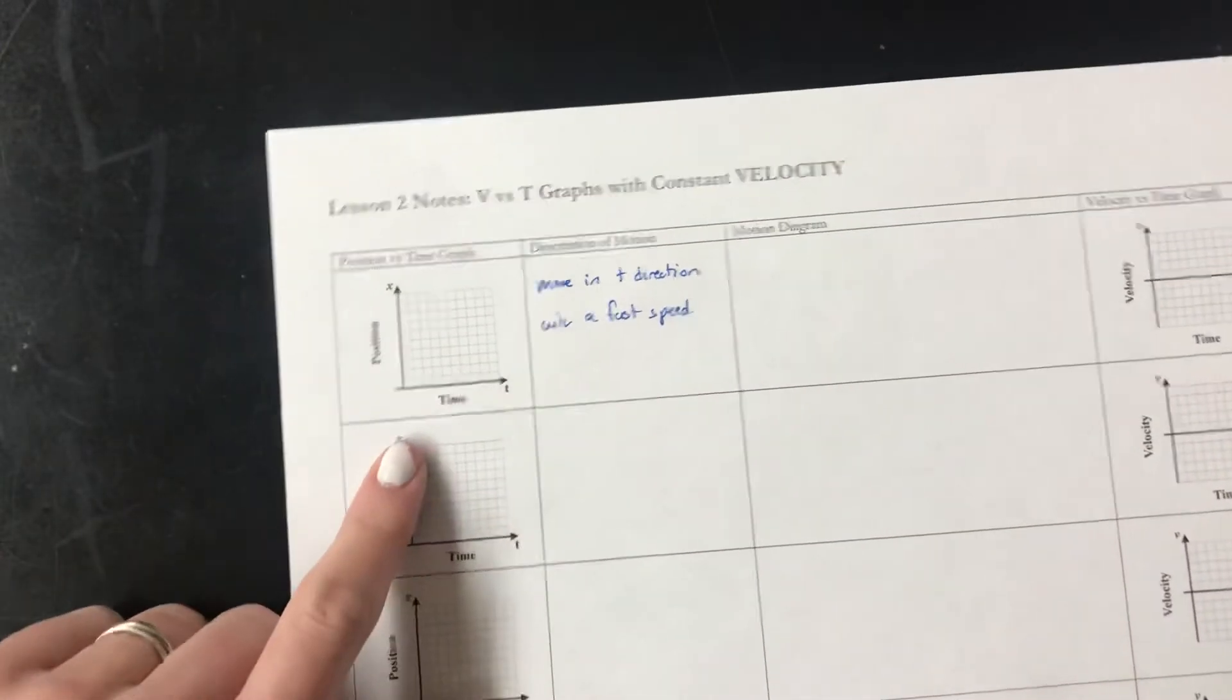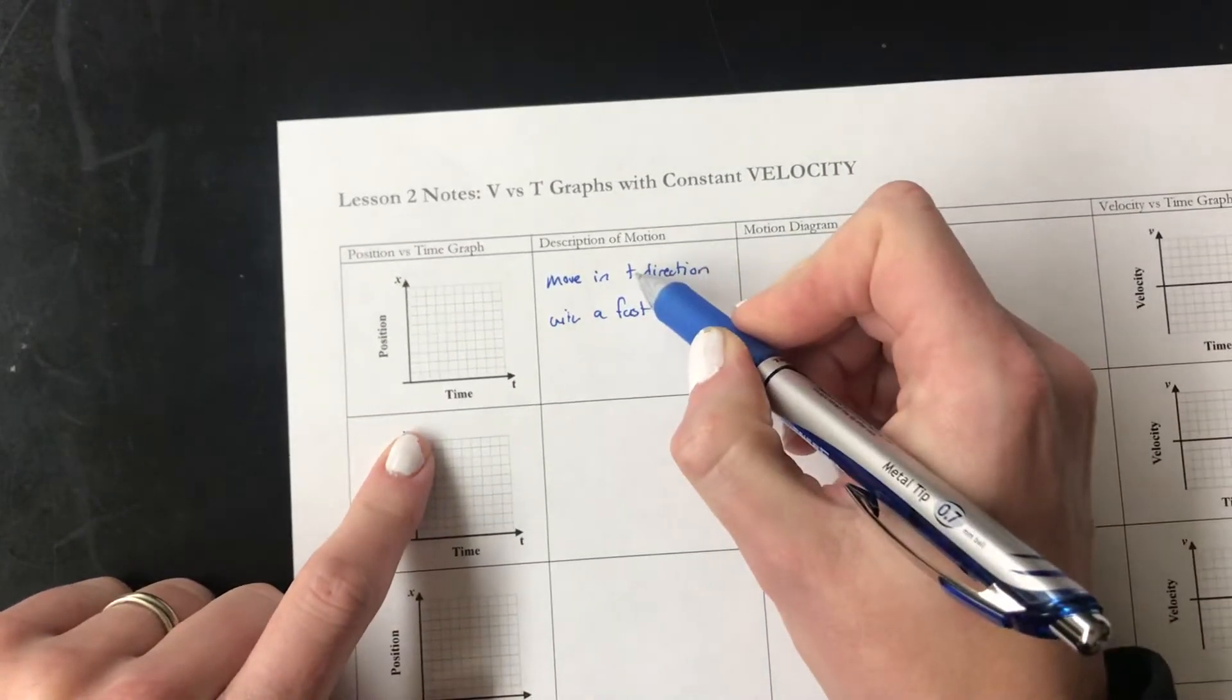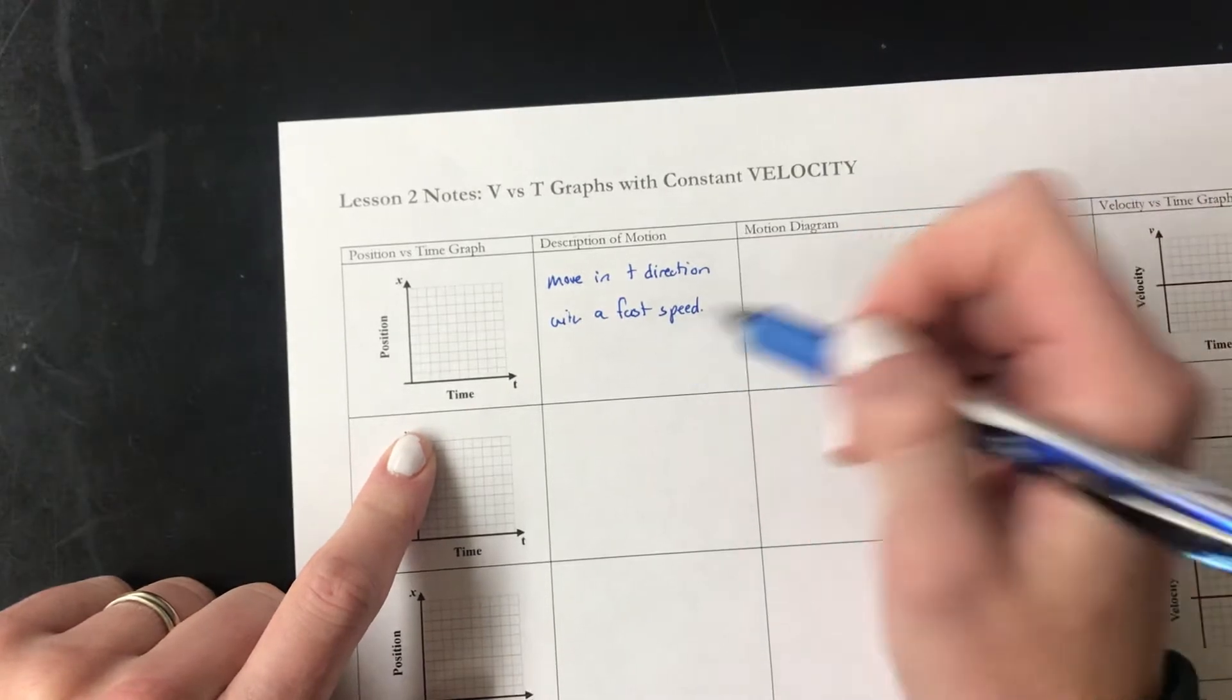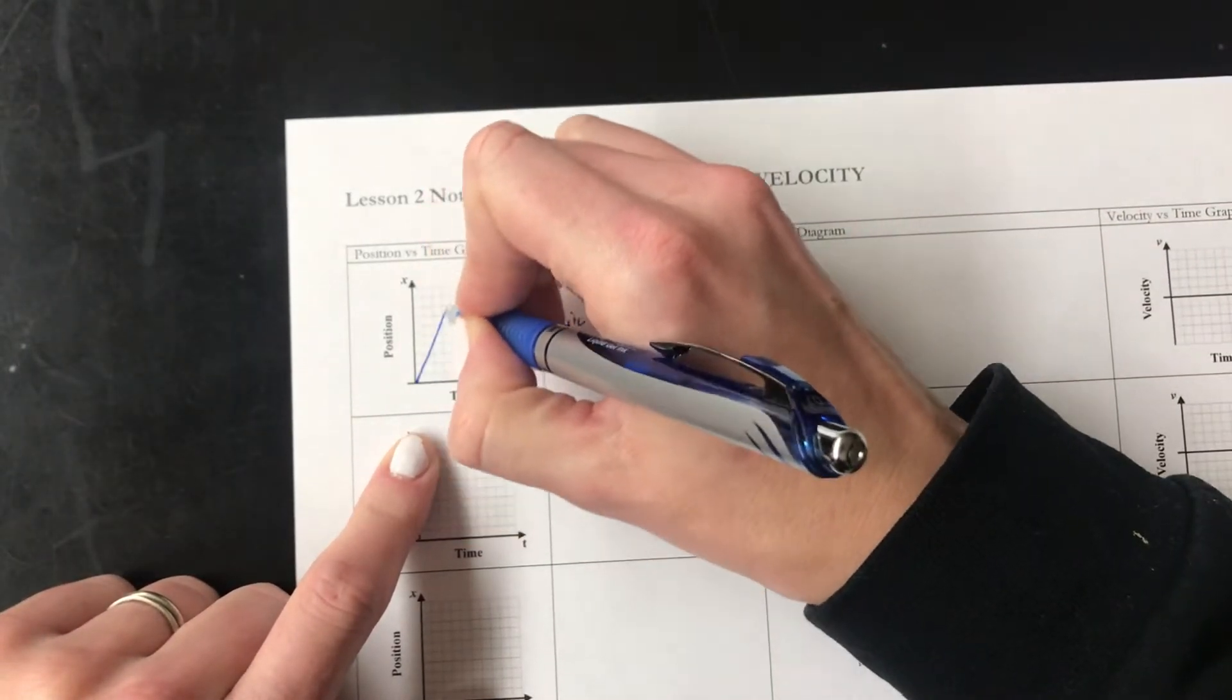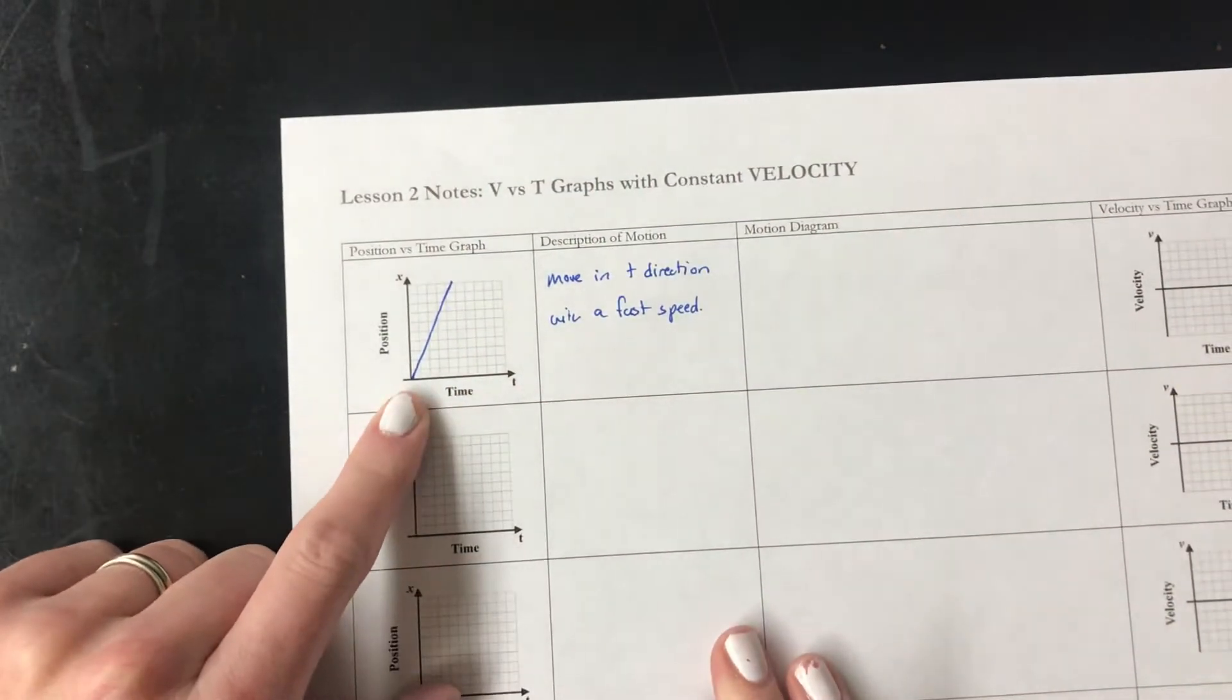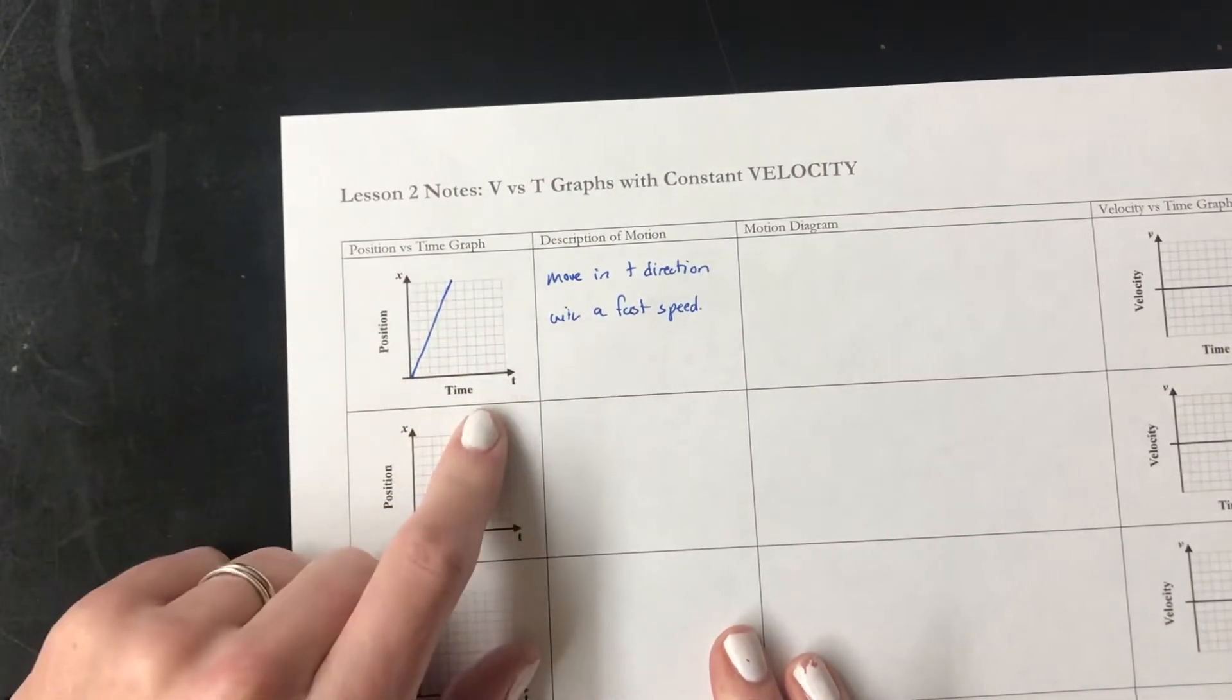First we could move in the positive direction with a fast speed. And when we do that, in the positive direction means our line goes up, and fast means that the line is steep, and so I'm going to draw it like this. That's an x vs. T graph, a position vs. time graph.